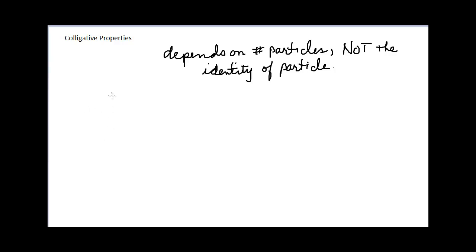The specific colligative properties we want to look at include vapor pressure, freezing point temperature, boiling point temperature, and osmotic pressure. Let's take them one at a time.